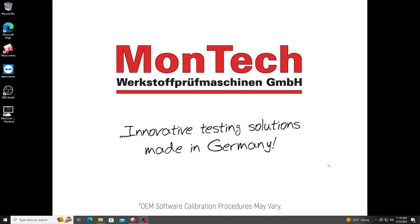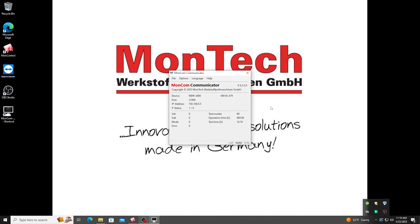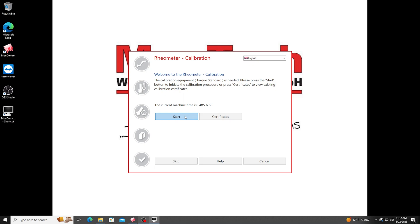For Montec units, enter the MONCOM software portal located in the bottom right hand corner of the operating system home screen. Go to options and click calibrate. Enter the password supplied by Montec. Next, the calibration welcome screen will open. Click start to continue.